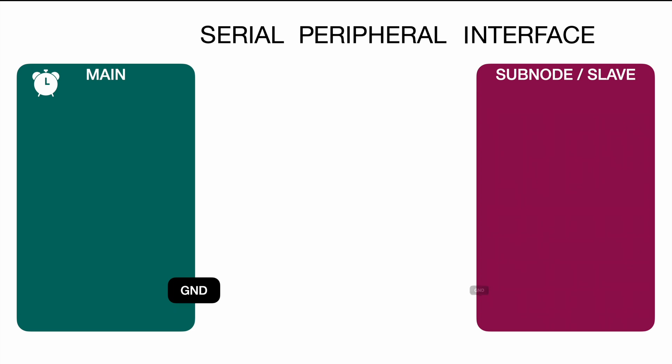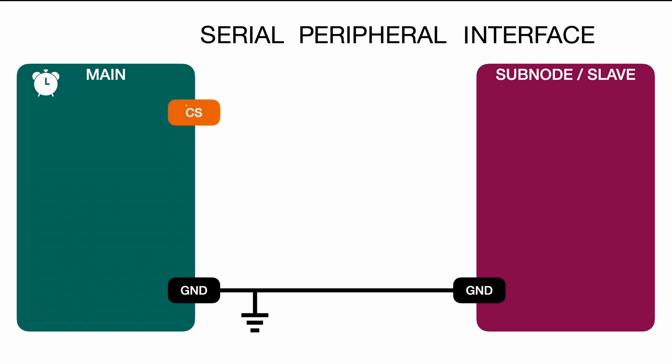First we have ground on the bottom, which connects the main and the subnode. Always make sure to have a common ground in any type of communication or circuit. For communication pins, we start with CS, referred to as chip select or slave select — SS or CS depending on the manufacturer.